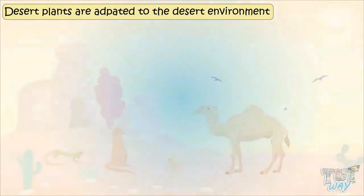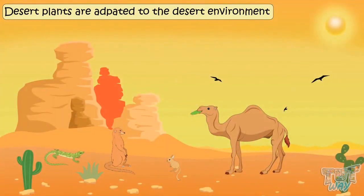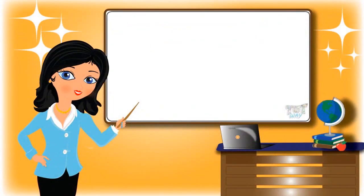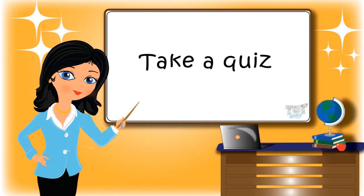So we see how desert animals and plants have adapted to survive in such an environment. Each kind of animal is adapted to its habitat, and such adaptations occur over hundreds of years. Today we learned what is adaptation and how desert plants and animals are adapted to their environment. Now you may go ahead and take a quiz to learn more. Bye bye!